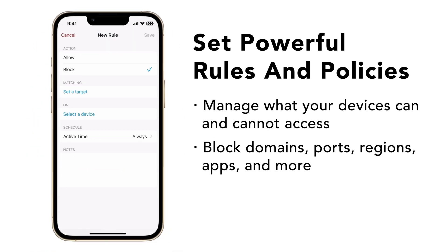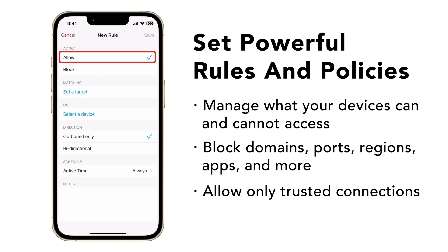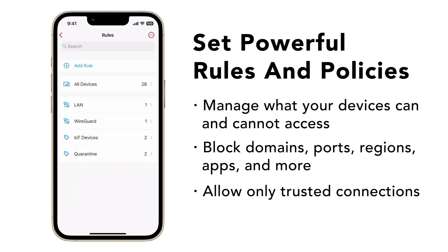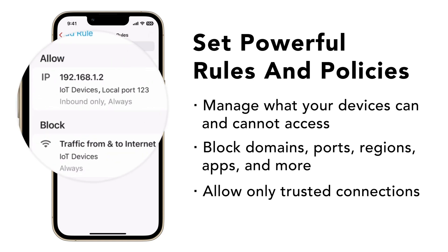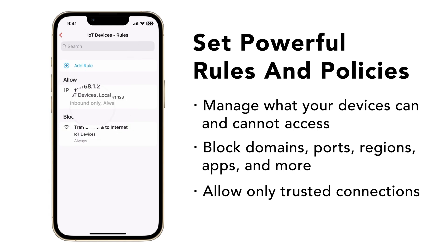For devices that are very purpose-specific and only need access to certain services, you can configure rules to only allow trusted connections to come through. For example, on your IoT devices, you can block all internet access but only allow access to the ports they need.